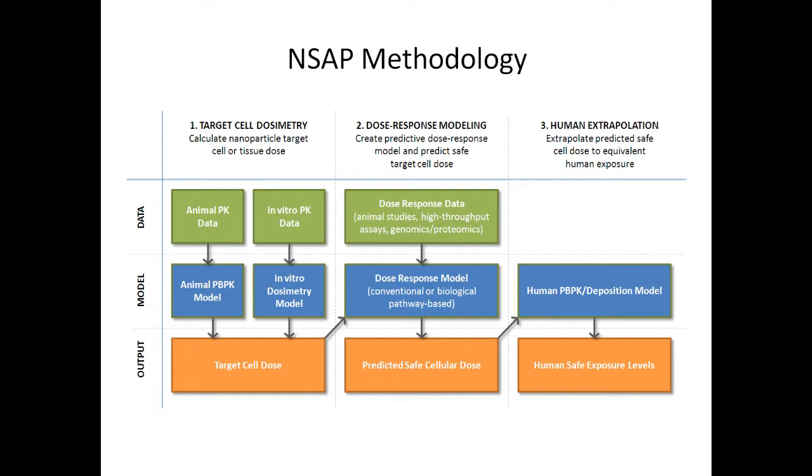First, target cell dosimetry is performed using either an in vitro or an in vivo kinetic model to determine the amount of material reaching the target cells in the toxicity assay. For the in vivo case, a physiologically based pharmacokinetic model can be used, for example. In the in vitro case, a model which predicts the sedimentation and diffusion of nanomaterials in the in vitro assay is used.